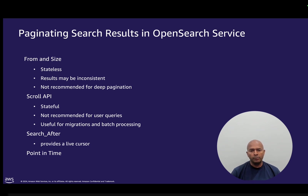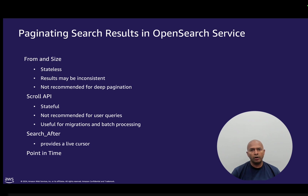Next one is scroll API. The scroll API search results are frozen at the moment of the request but they are bound to a particular query. Scroll API is not recommended for regular user queries. It is best to use for migrating the data, re-indexing, or for batch processing.